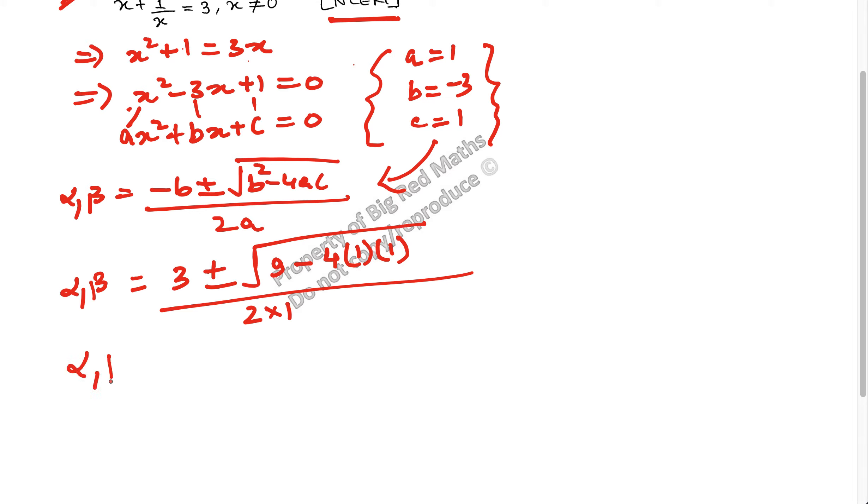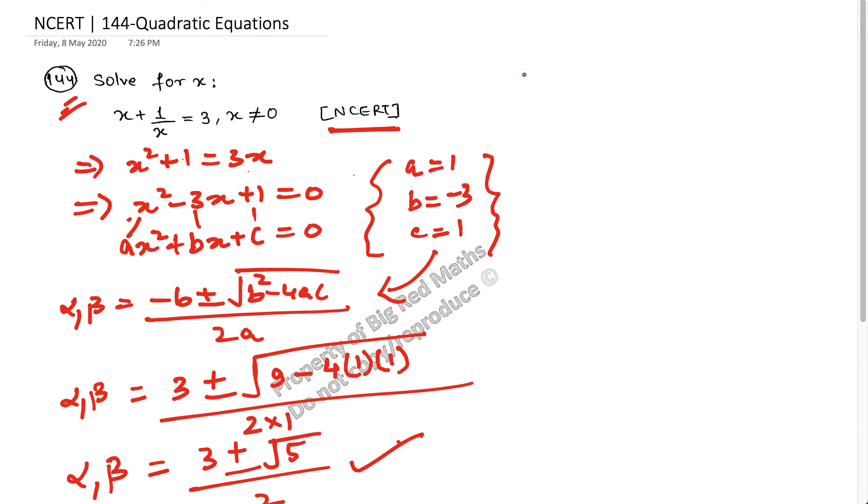So alpha and beta becomes 3 plus minus square root of 9 minus 4 which is 5, divided by 2. And this is the solution. So the value of x is equal to 3 plus minus square root of 5, and this whole thing is divided by 2.